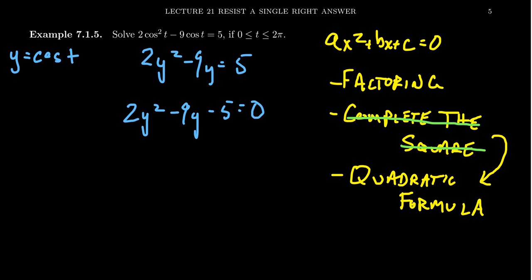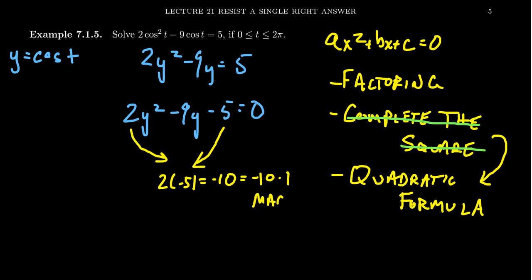When factoring, you want to set the right-hand side equal to 0, so you get 2y² − 9y − 5 = 0. Then combine the leading coefficient and the constant coefficient: multiply them to get 2 × (−5) = −10. We need to find factors of −10 that add up to −9. In this case it's a pretty easy guess: −10 and 1. Notice −10 × 1 = −10 and −10 + 1 = −9. So we've found our so-called magic pair.